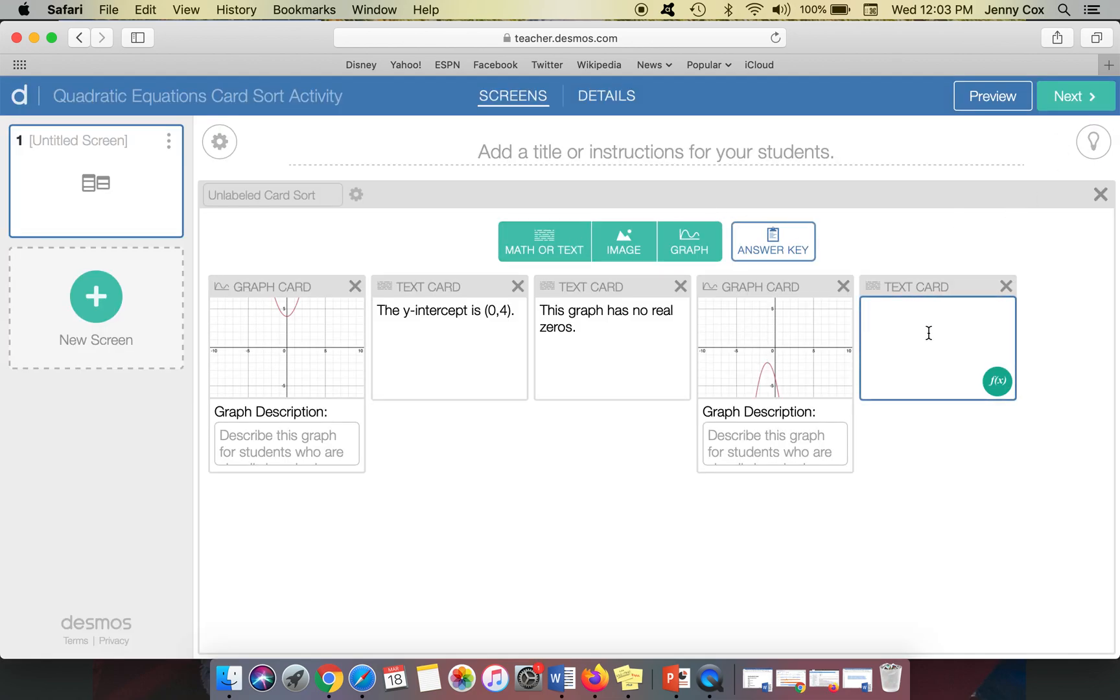So then under my math, I could say the axis of symmetry is x equals negative one. And I might have something like, well, notice how I have this graph has no real zeros. I already had that. So maybe I could say, and its axis of symmetry is at x equals zero, because if I say something with it has no real zeros, I only want it to match to one card.